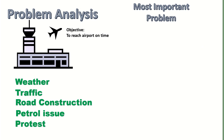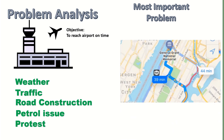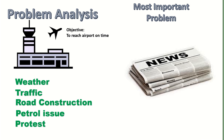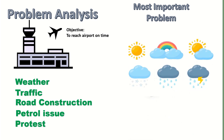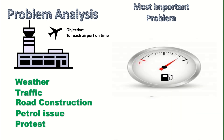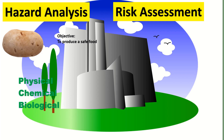The next task is to identify the most important problem based on facts and figures. Here you need to collect data from different means — for example, check Google Maps to get information about traffic, newspapers for law and order or protest information, weather predictions, and the car's petrol tank. Once you collect all this information, you will know the most important problem and be able to take measures accordingly.